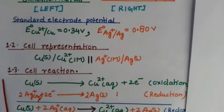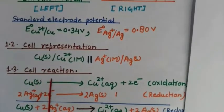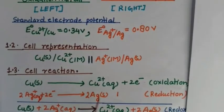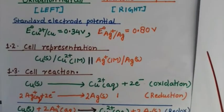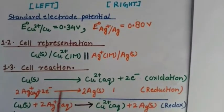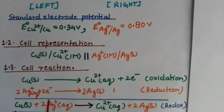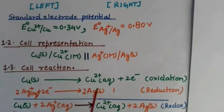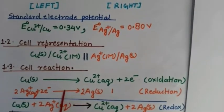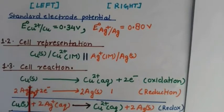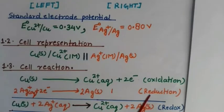Next, we write the cell reaction. This cell is based on a redox reaction where oxidation and reduction take place simultaneously. As a result of this spontaneous reaction, electrons are produced and move from the copper electrode toward the silver electrode since the two electrodes are not in direct contact, generating a working cell. The cell reaction involves two simultaneous reactions: oxidation and reduction.